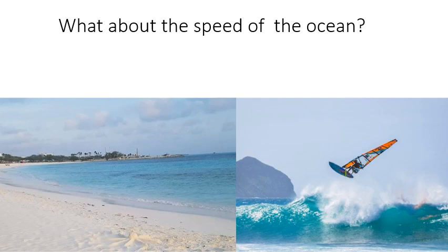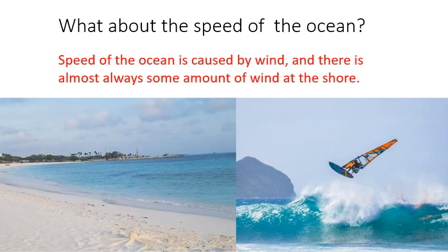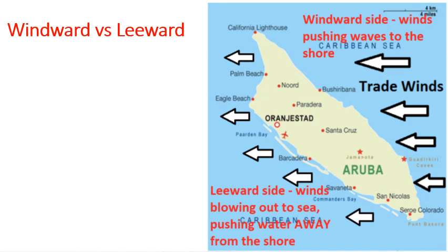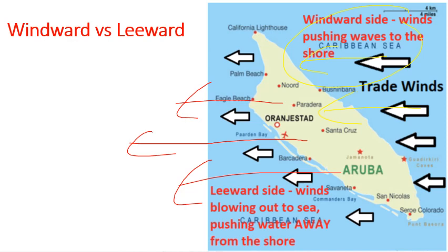Now the speed of the ocean — the ocean is mostly still, but if you've ever been to the beach, you know the waves are moving. Waves are caused by wind, so the ocean's wave action can change depending on the amount of wind. There tends to be more wind on one side of an island than the other — that's the windward versus the leeward side. On the windward side, the winds are hitting the shore; on the leeward side, the winds are pushing away from the shore. That changes the wave action and the amount of erosion.